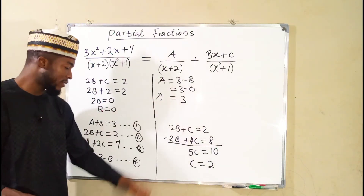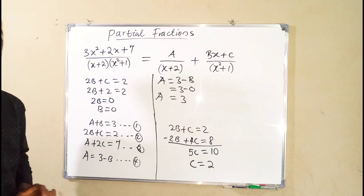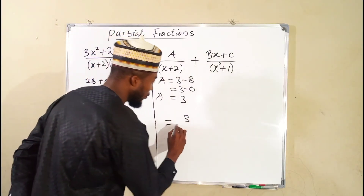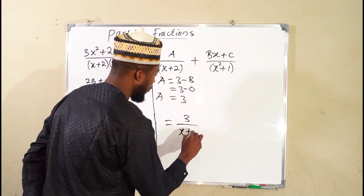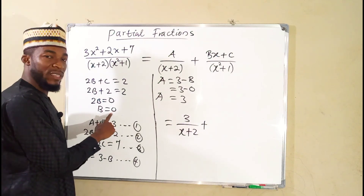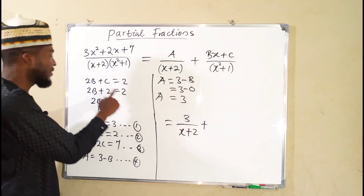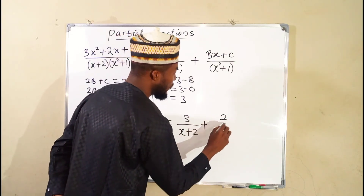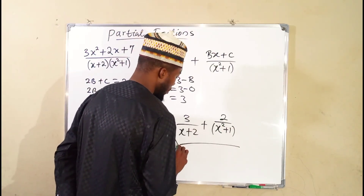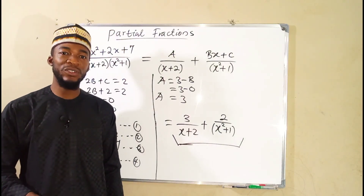Now we have obtained the values of a, b, and c. We substitute them back into the original equation to obtain our partial fractions. For a equals 3, we have 3 over x plus 2. Then bx: since b equals 0, that term vanishes, leaving just c equals 2. So we have 2 over x squared plus 1. Hence these are our partial fractions of this compound fraction. Thank you for watching. Do have a nice day.